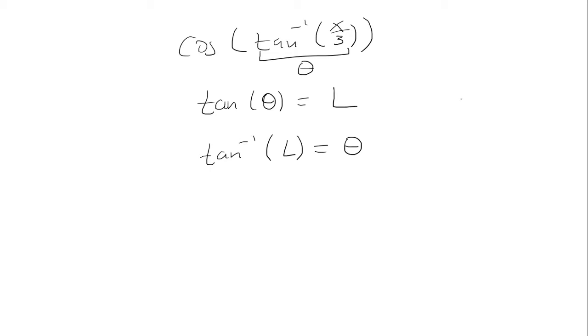We'll call it theta, so the tangent of theta will be x over 3. We can draw a right triangle, call this theta. Tangent is opposite over adjacent, so x would be opposite, adjacent is 3. We'll do the Pythagorean theorem, will be the square root of x squared plus 9.